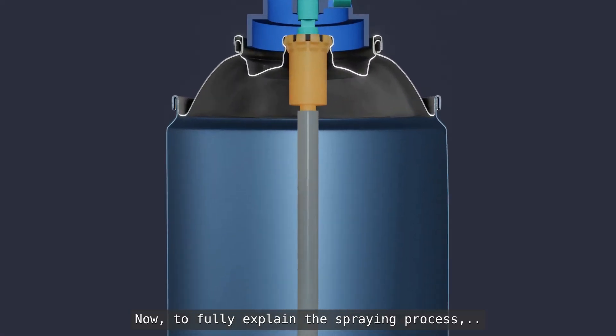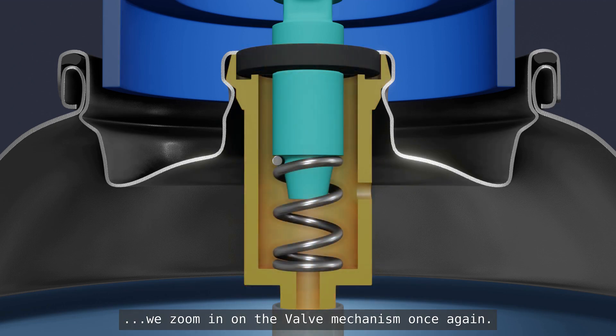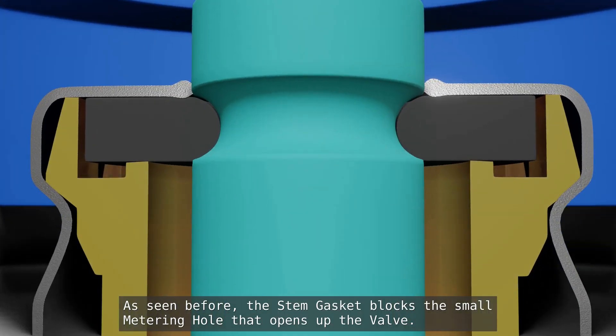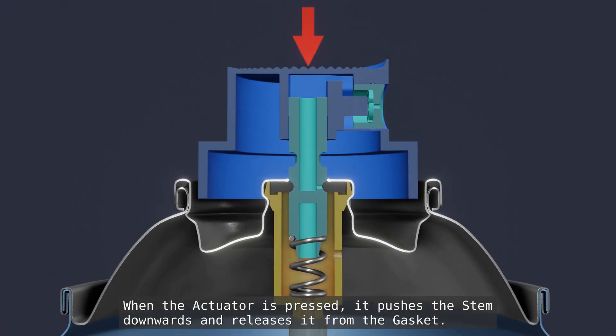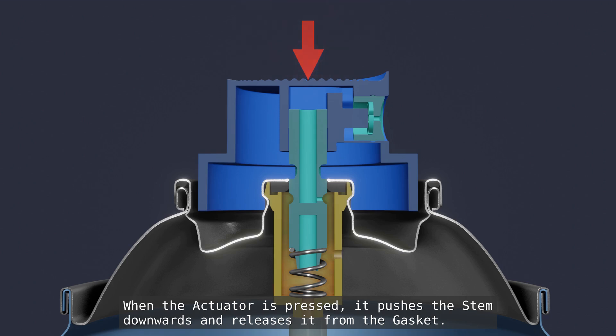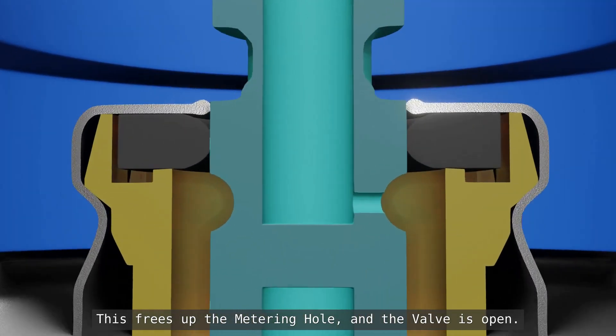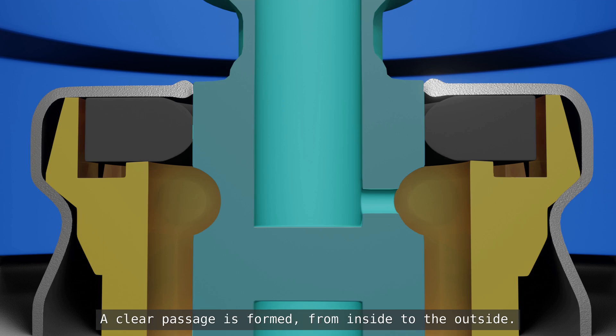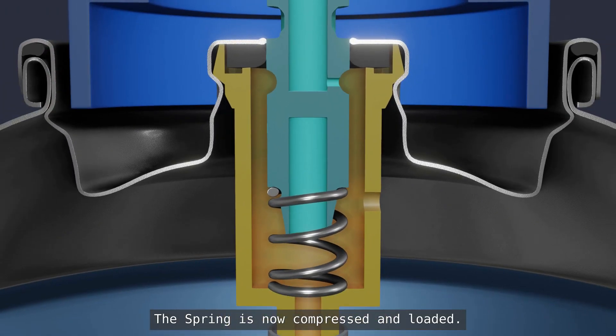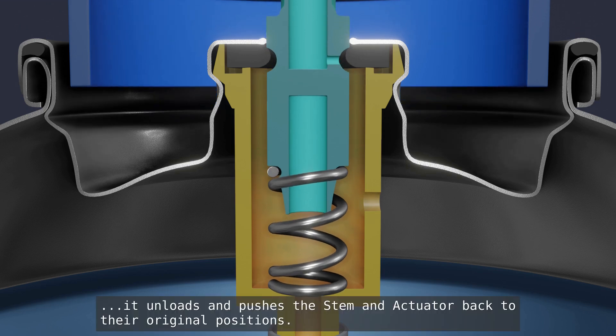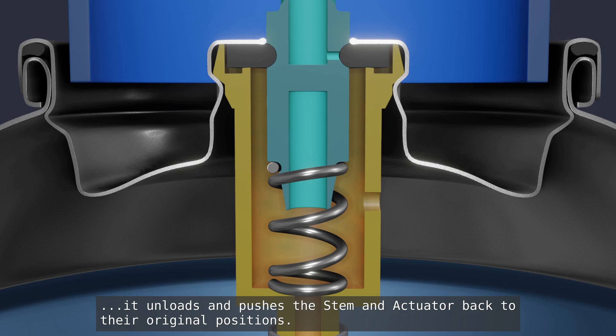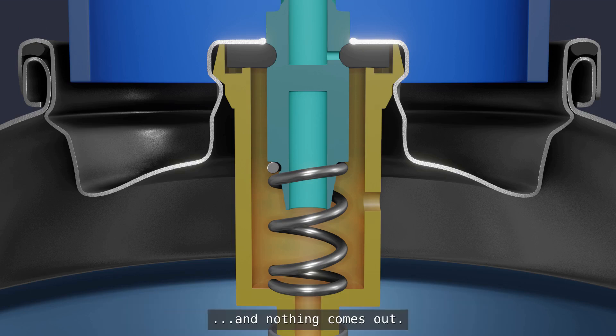Now, to fully explain the spraying process, we zoom in on the valve mechanism once again. In this current position, the valve is closed. As seen before, the stem gasket blocks the small metering hole that opens up the valve. When the actuator is pressed, it pushes the stem downwards and releases it from the gasket. This frees up the metering hole and the valve is open. A clear passage is formed from inside to the outside. The spring is now compressed and loaded. Once the force on the actuator is released, it unloads and pushes the stem and actuator back to their original positions. This effectively closes the valve and nothing comes out.